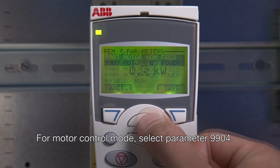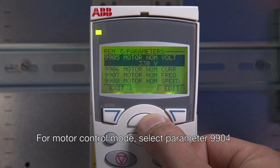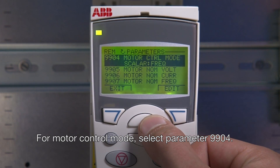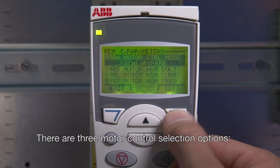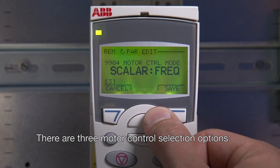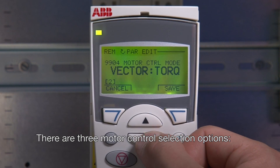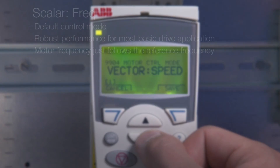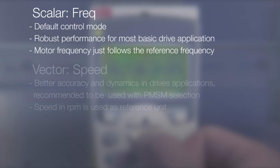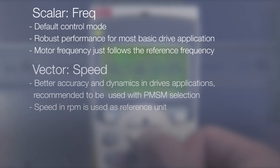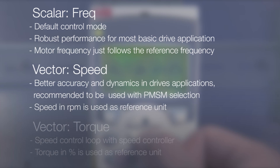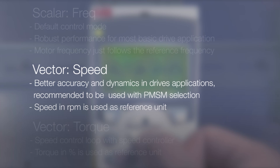For motor control mode, select parameter 9904. There are three motor control selection options: scalar frequency, vector speed, and vector torque. For this video, we will use vector speed control.